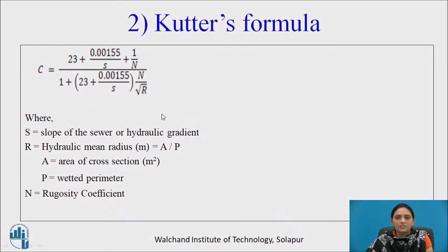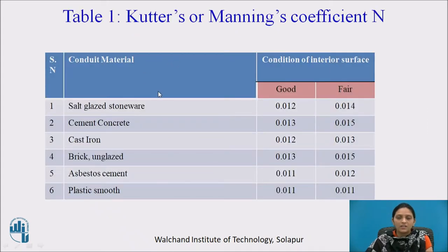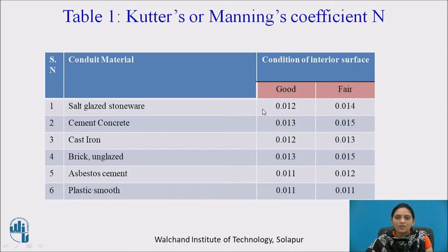Cutter's formula: Cutter gave an empirical formula for Chezy's constant C. In this formula there is S, N, and R. S is the gradient of the sewer line, R is the hydraulic mean radius, and N is the rugosity coefficient. Table 1 gives the rugosity coefficient, also called Manning's coefficient. N depends on the roughness or smoothness of the inner surface. The table lists various materials and their conditions — good or fair — with corresponding values of N. Refer to Table 1 for the value of N.